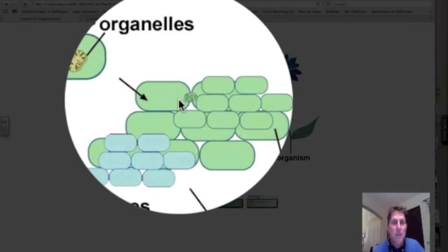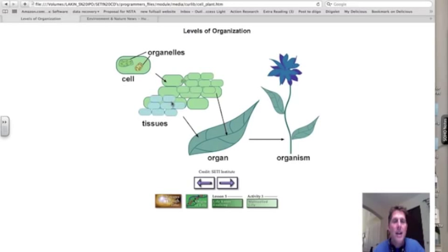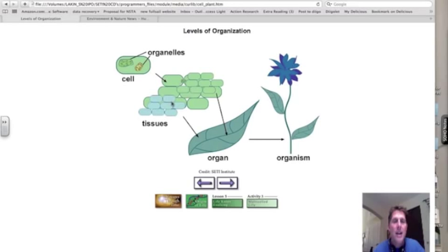So different tissues working together for the same function create an organ. So here I have a number of tissues. Here's my organ, the leaf. In the leaf I have tissues that collect sunlight and you have these veins here, the ribs. These are tissues that are going to carry nutrients back and forth, to and fro.